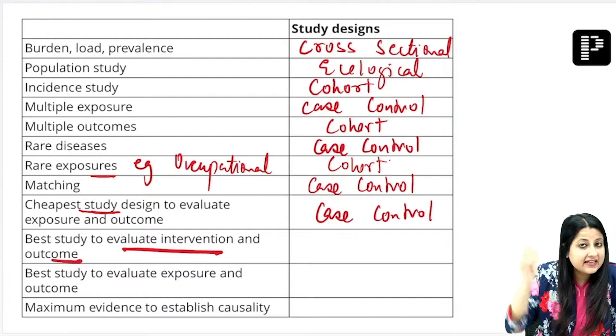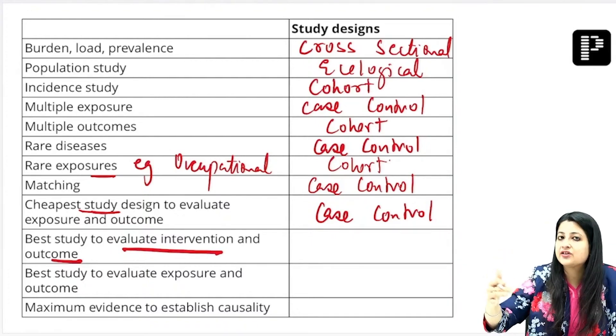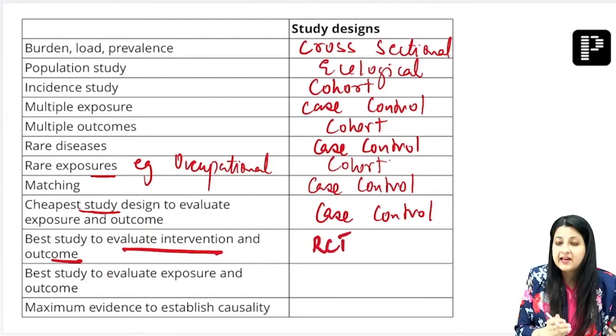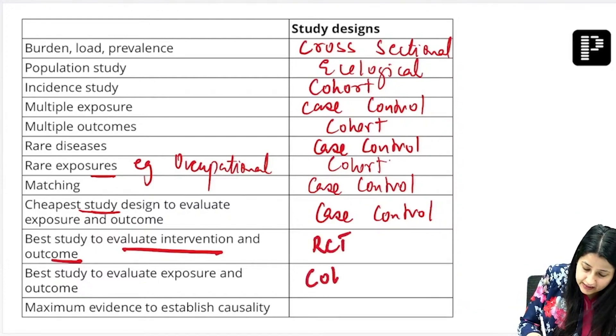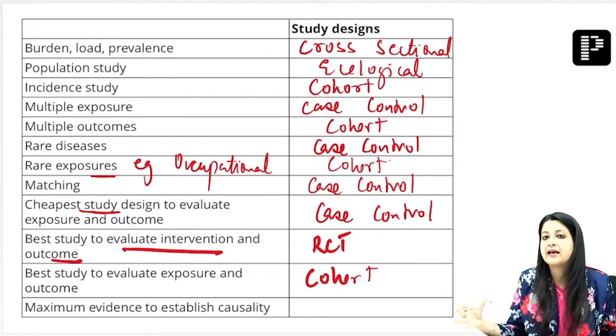Best study design to evaluate intervention and outcome. Best study design to evaluate intervention, intervention and outcome—for that it's RCT. Exposure and outcome, for that it is cohort. Are you understanding?